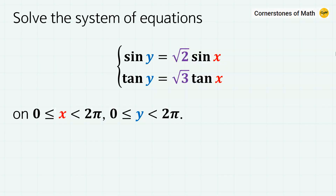Hello, and welcome to yet another video of Cornerstones of Math. Today, we are going to solve the system of equations: sine y equals square root of 2 sine x, and tangent y equals square root of 3 tangent x. The ranges of x and y are both given as greater than or equal to 0 and less than 2π — so only during a single period of the sine function.